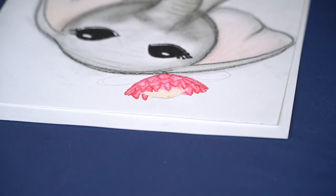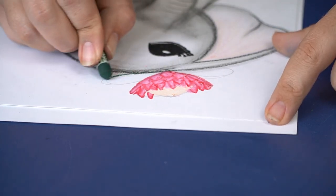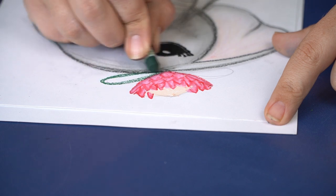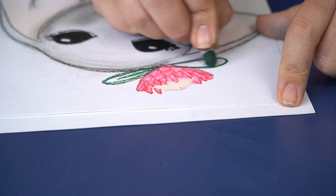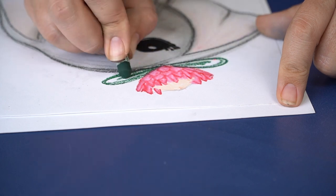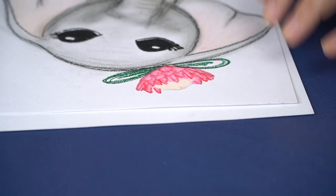I'm going to use a deep green and a pale green to color in the leaves. I'll start with my deep green first. Give the leaf an outline and a line down the middle. Then color over it with my pale green.